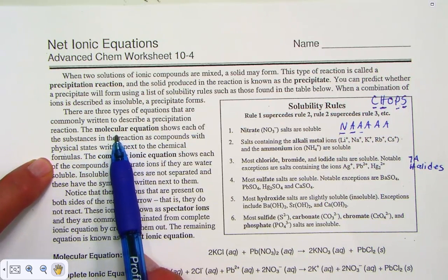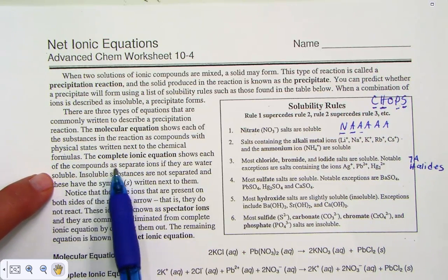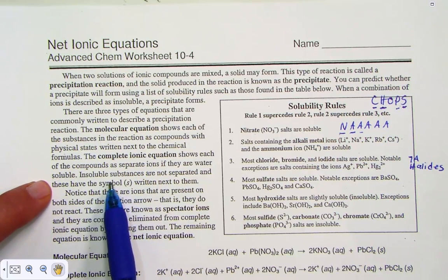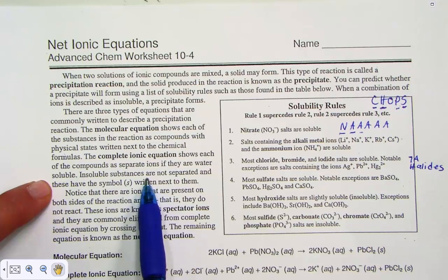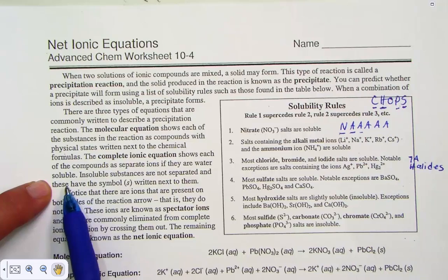From the molecular equation, we hit the complete ionic equation, in which the compounds are separate as ions, as if they were in water. Insoluble substances are not separated. So if they're aqueous, break them apart; if they're solid, leave them together.